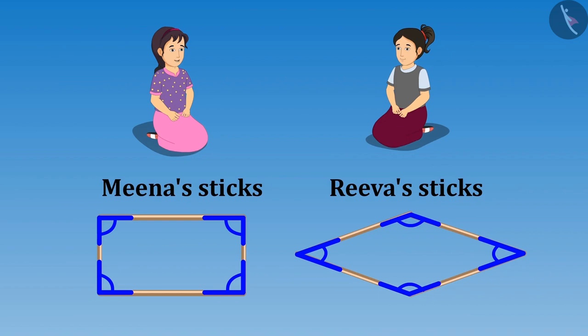Because the angles in both figures are different. Just look here, the angles in your figure are like this. And the angles in my figure are like this. Because of different angles, the shape of figures are also different.